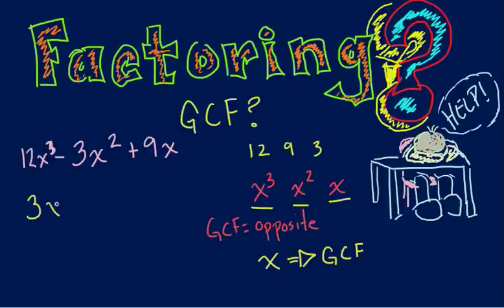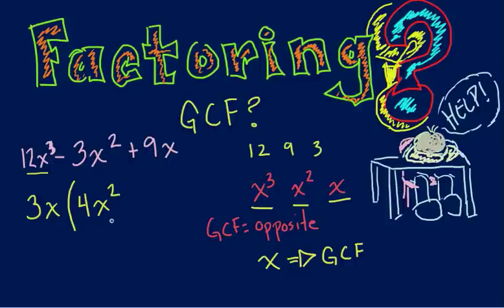So we have x pulled out. Now, what's left over? Ask yourself what you have to multiply 3x by to get each term. What do I have to multiply 3 by to get 12? We multiply by 4. And what do I have to multiply x by to get x cubed? Using our rules for multiplying exponents, it would be x squared — because 3x times 4x squared gives me 12x cubed. Factoring is just the distributive property backwards.